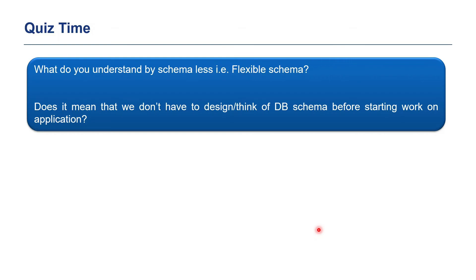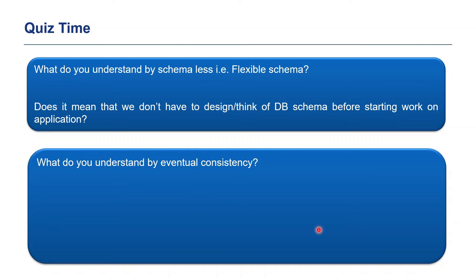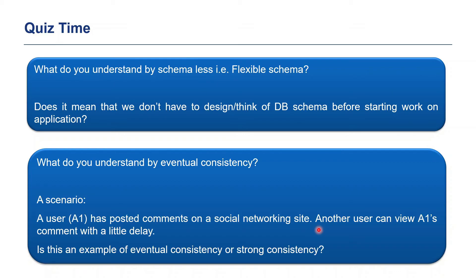Now let me ask you a question: can you describe your understanding of schemaless or flexible schema? Does it mean that we don't have to think of DB schema before starting work on an application? Please feel free to post your answers in the comment section. Another question: what do you understand by eventual consistency? Consider this scenario — a user named A1 has posted comments on a social networking site and another user can view A1's comments with a little delay. Is this an example of eventual consistency or strong consistency? Looking forward to your answers in the comments.